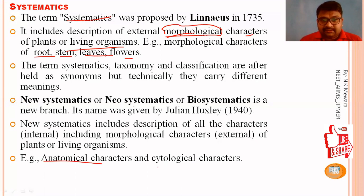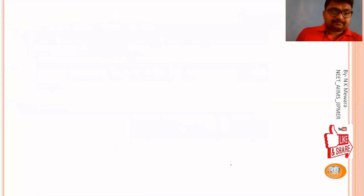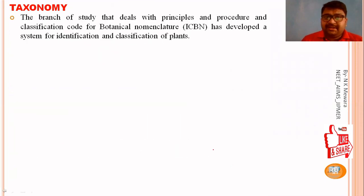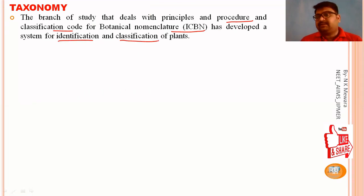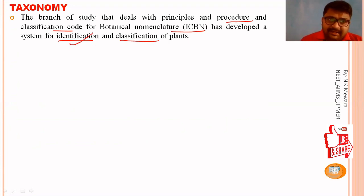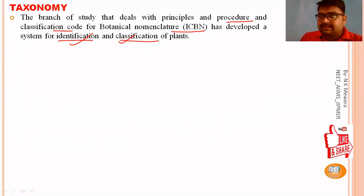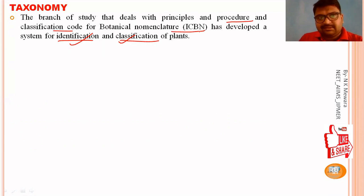Examples in new systematics include anatomical and physiological characteristics. Taxonomy is the branch of study that deals with the principles and practice of identification and classification of organisms. It involves developing systems for identification and classification. Carolus Linnaeus is considered the father of taxonomy, and Santapau is considered the Indian father of taxonomy.